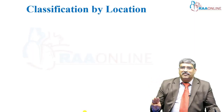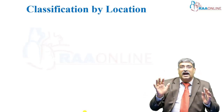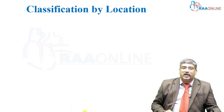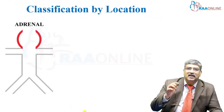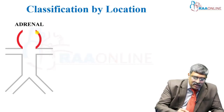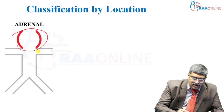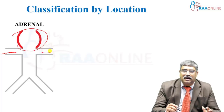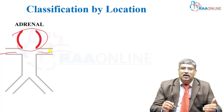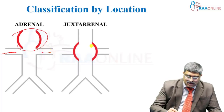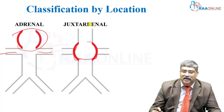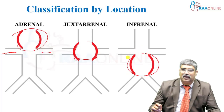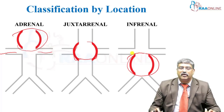There are three major classifications: by location, by shape, and by size. For classification by location: suprarenal is just above the renal artery; juxtarenal is adjacent to the renal artery; and infrarenal is below the renal artery. This classifies abdominal aortic aneurysm with regard to location.